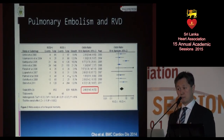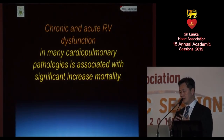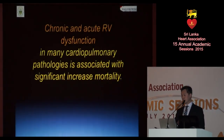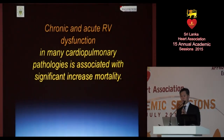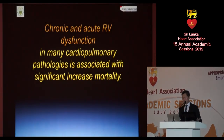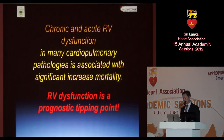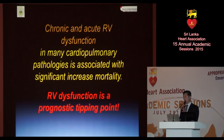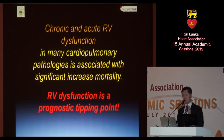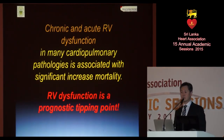The point I'm trying to make is that in many cardiopulmonary pathologies — chronic and acute RV dysfunction — we see associated increased mortality. To me, RV dysfunction is a very important prognostic tipping point. If you have RV dysfunction, no matter what you're dealing with, you are going to be at much higher risk than if you didn't.